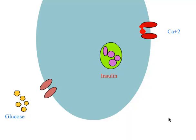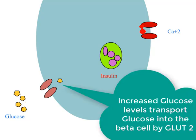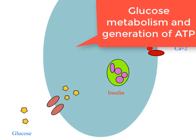When glucose concentration rises in the blood, glucose is transported into the beta cell with the help of GLUT2. Metabolism of the glucose within the cell generates ATP.